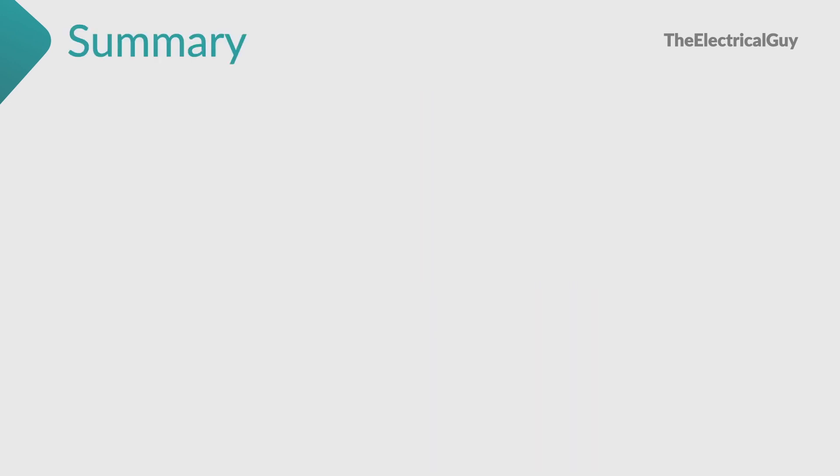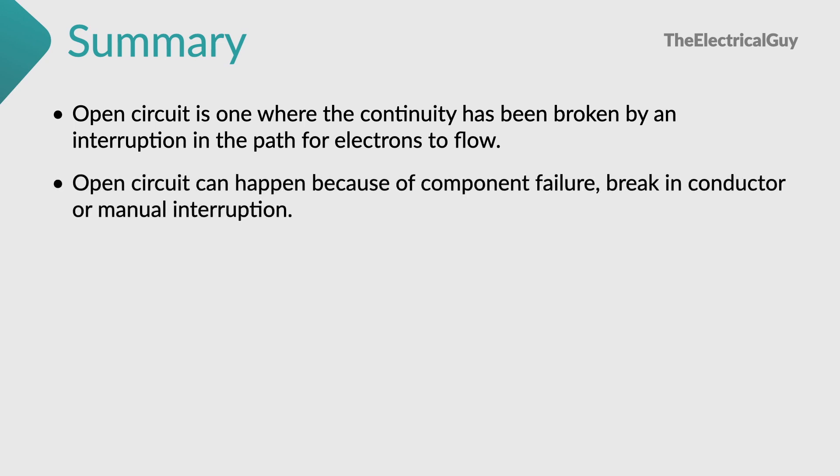You can also let me know your thoughts on this via comments. Now let's summarize this video. Open circuit is one where the continuity has been broken by an interruption in the path for electrons to flow. Open circuit can happen because of component failure, brake in conductor or manual interruption.